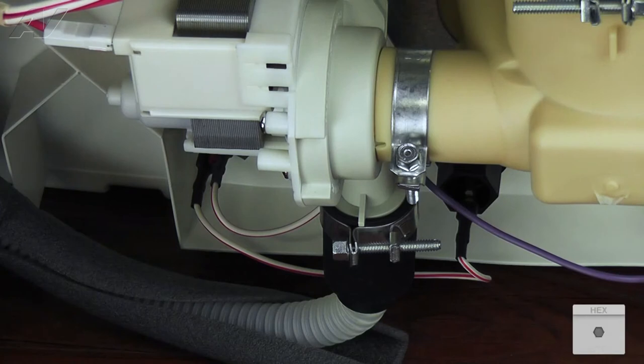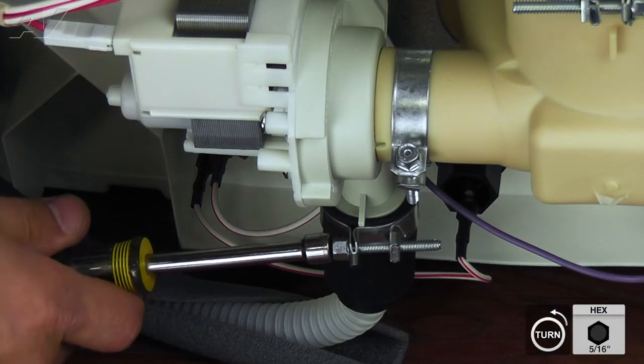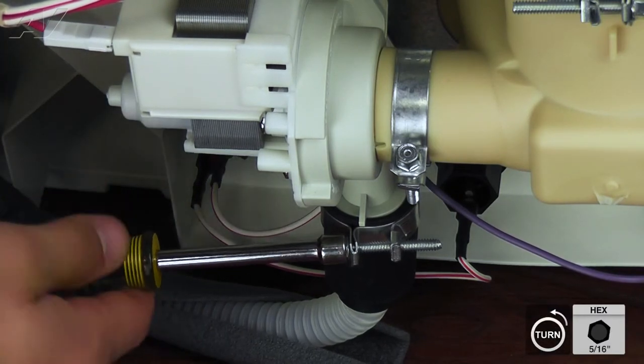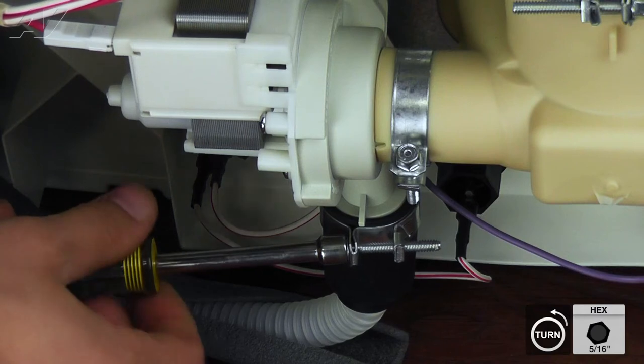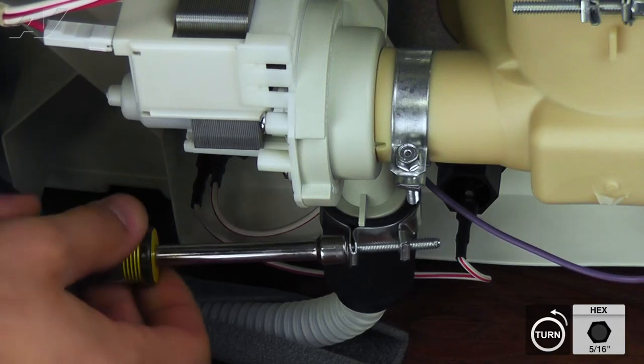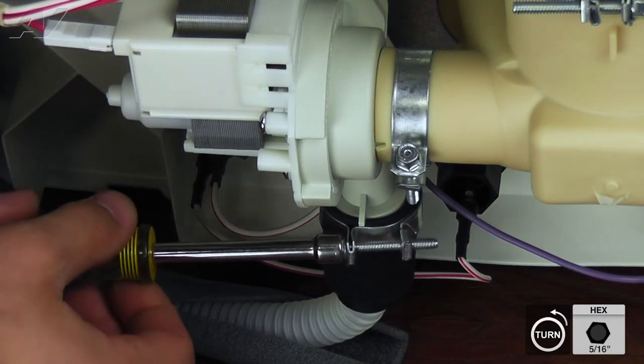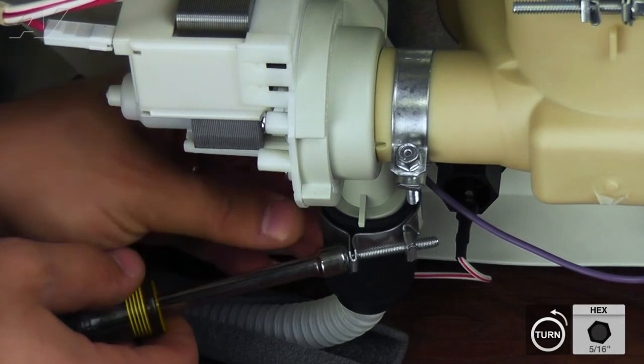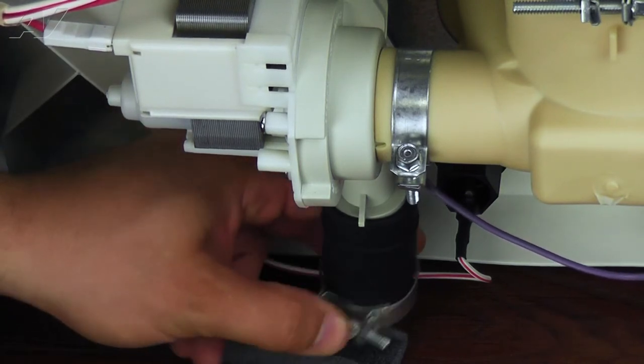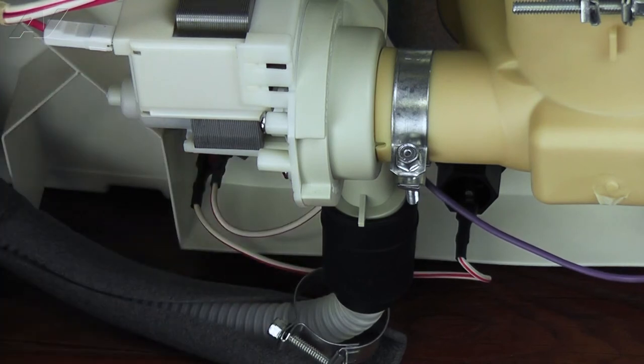To begin, remove the 5/16 inch screw holding the drain hose clamp in place. Once the screw is loosened, slide the clamp down the hose and slide the hose off of the pump.